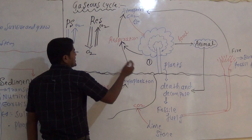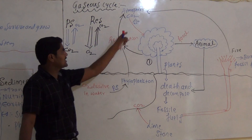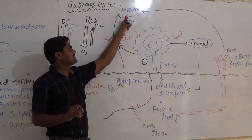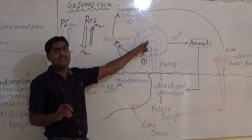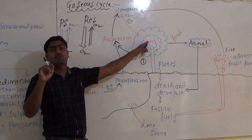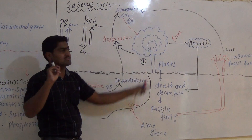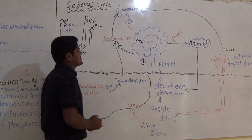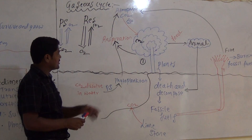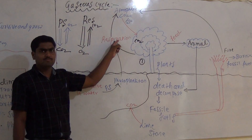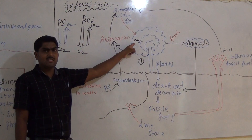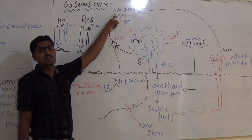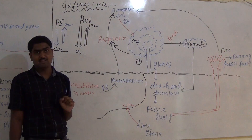During photosynthesis, carbon dioxide is absorbed by the plant and accumulated in the plant body, where it is converted into carbohydrates. During respiration, carbon dioxide is released from the plant body back into the atmosphere.